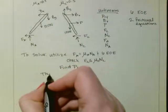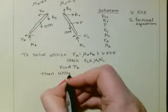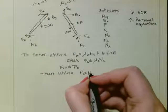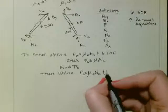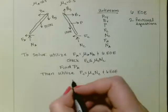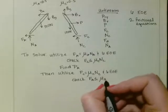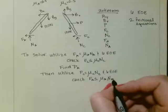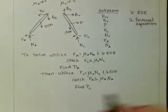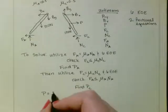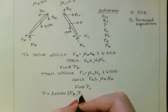Then, we have to check the other side. So we would utilize FC is equal to mu C NC and our six equations of equilibrium. And then we need to check, in this case, that FA is less than or equal to mu A NA and this gives us PC. Then our final P value would be equal to the lesser of PA or PC.